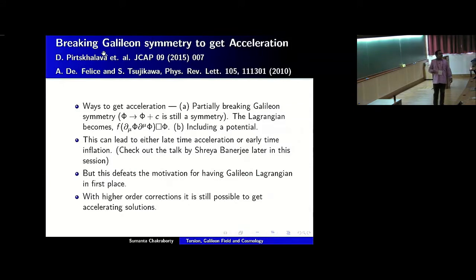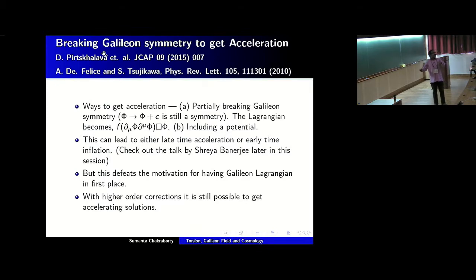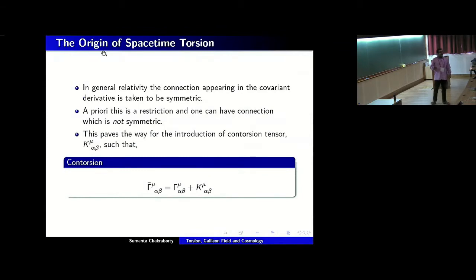There have been several proposals for how to achieve late-time acceleration. For example, you can break the Galileon symmetry — either partially, by multiplying the Lagrangian by arbitrary functions of the canonical kinetic term, or completely by including a potential. Such scenarios will be discussed by Shreya later in this session. However, this defeats the original motivation of the Lagrangian because the symmetry transformation no longer exists. Furthermore, if you add the L4 and L5 higher-order terms, you can still get acceleration, but the question is whether we can achieve it with the most minimal possible correction.